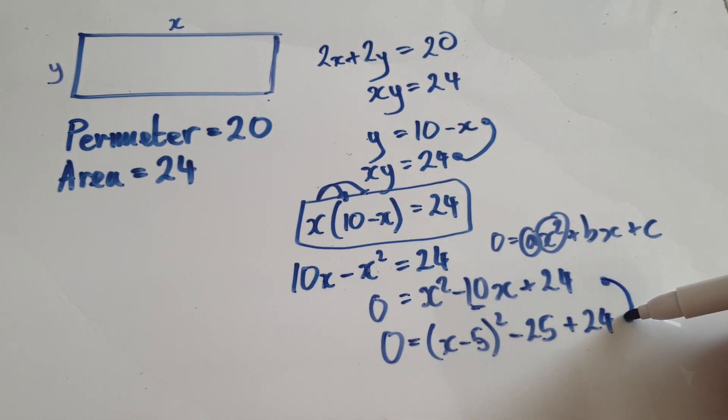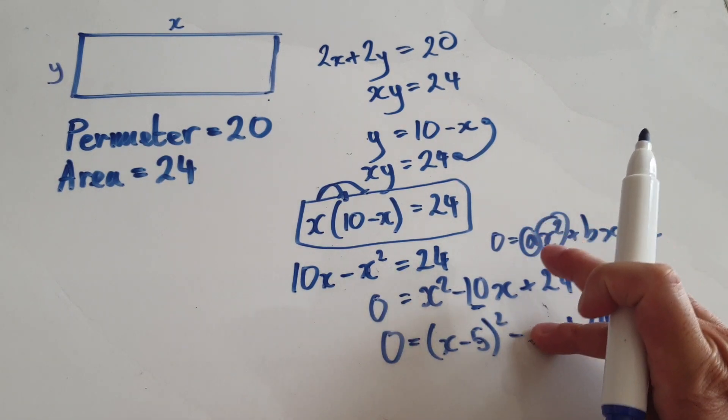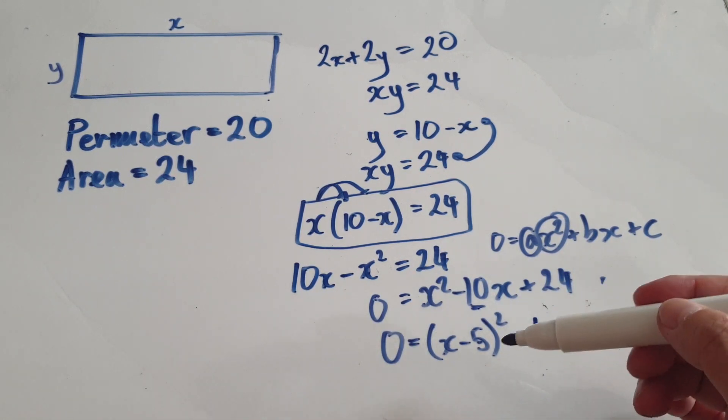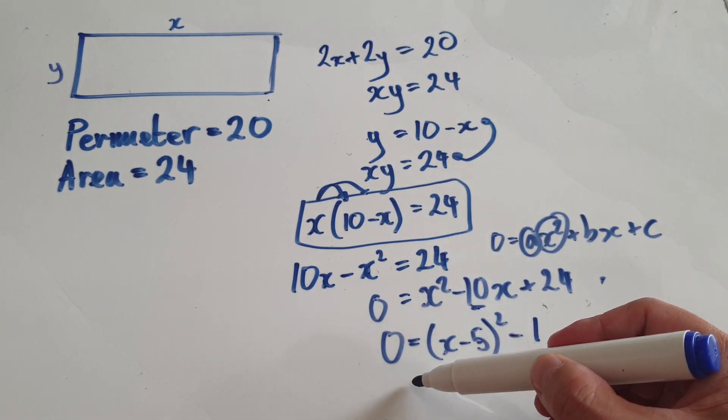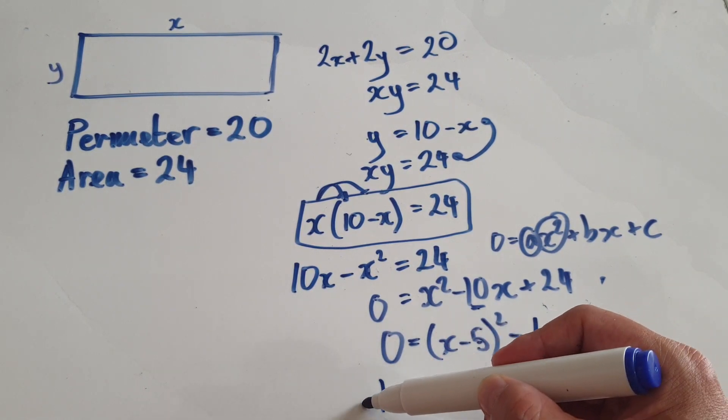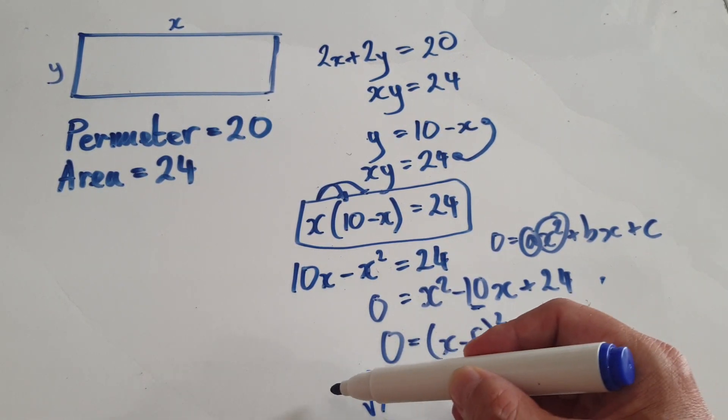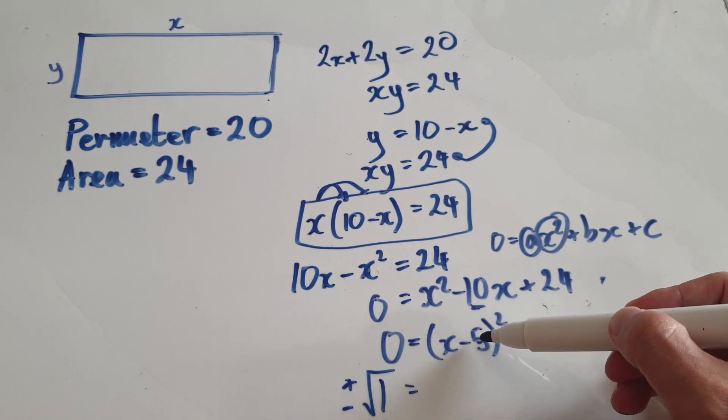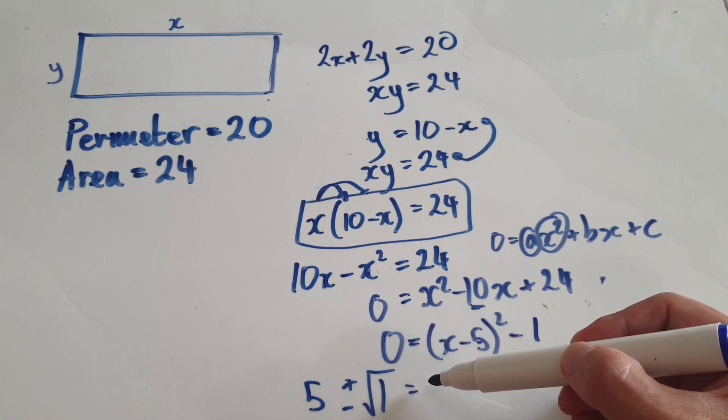Well, I'm assuming you know how to do this step. If not, then you've got to research. So now you want to get x on its own, so add one to both sides, square root both sides, and then add five. When you square root you get two versions, the positive and the negative, and then you add five. So that would be your x.